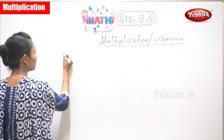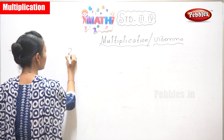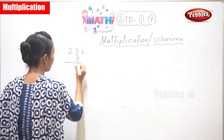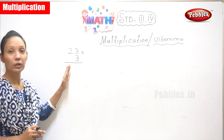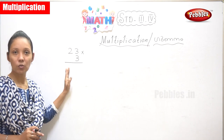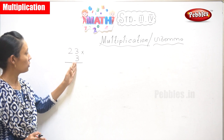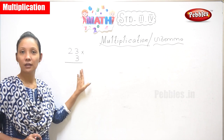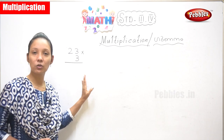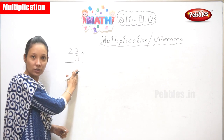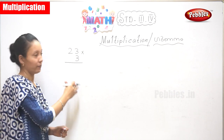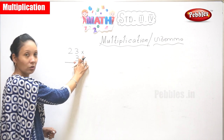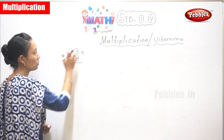Now the first one is with a small number. The number is 23. So 3 into 3 — your numbers which are on your right, you need to multiply. So now you need to multiply 3 into 3. This is called 'into.' Yes, children, you know that, isn't it? So what is 3 into 3?